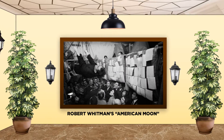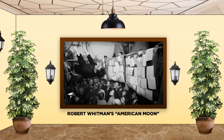Robert Whitman's American Moon was first performed at the Rubin Gallery in New York City. The piece consisted of six paper tunnels which radiated outward from the performance area, where the audience would sit to watch vows of clothing moving.